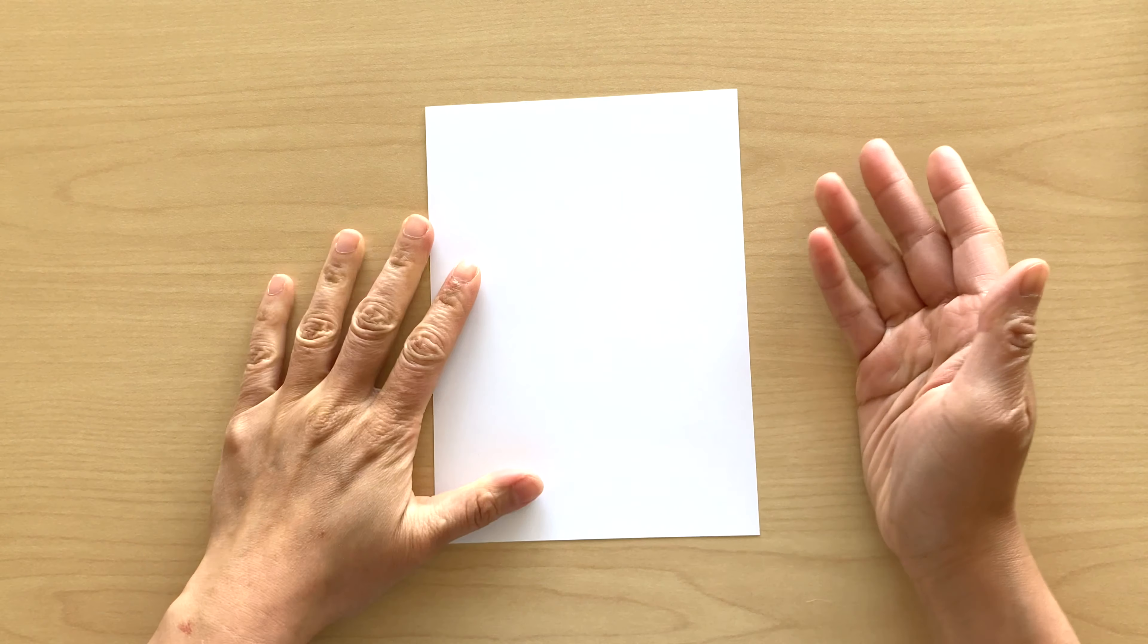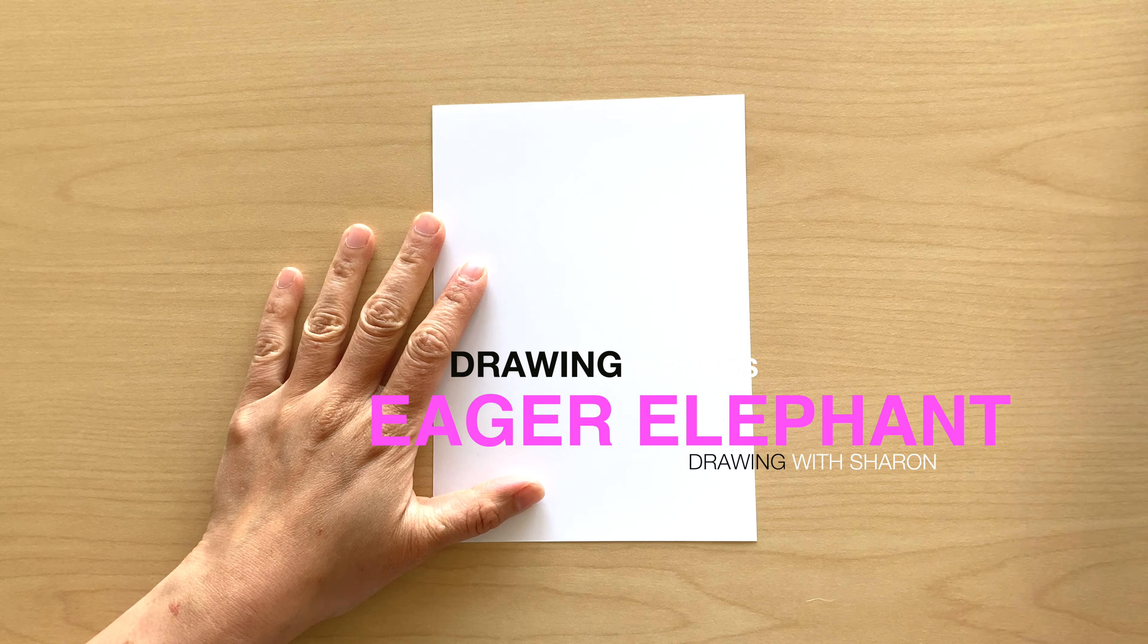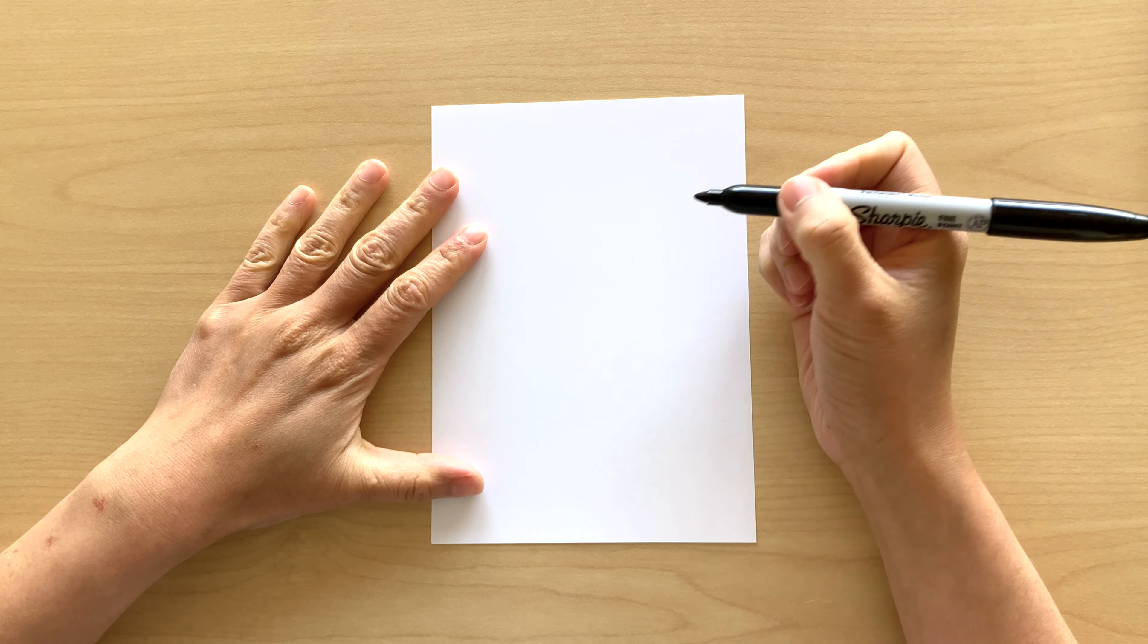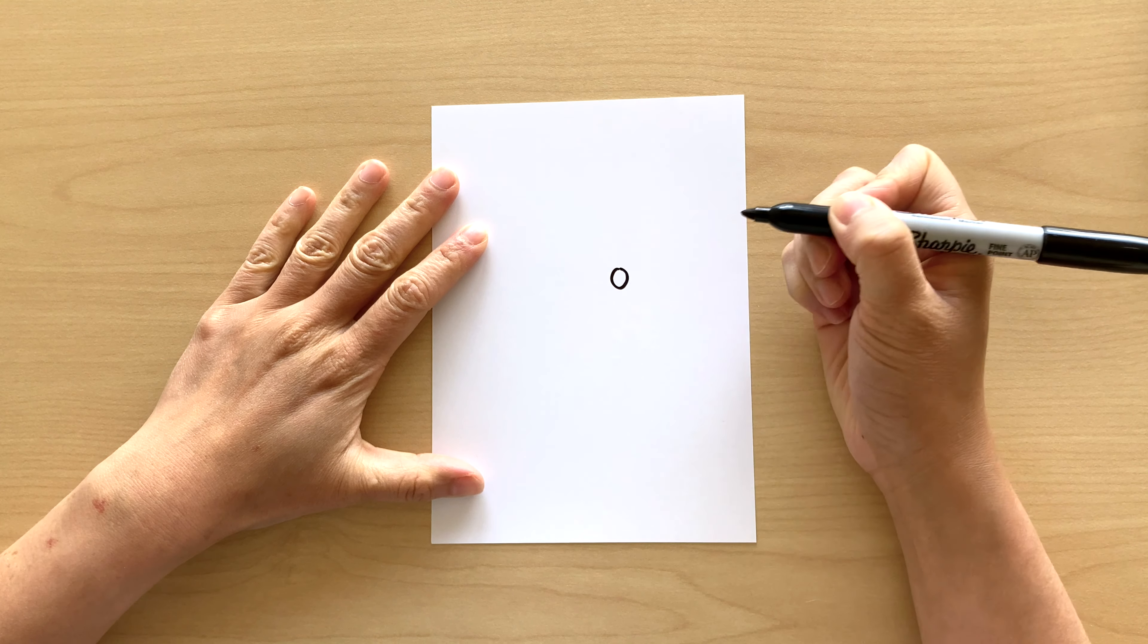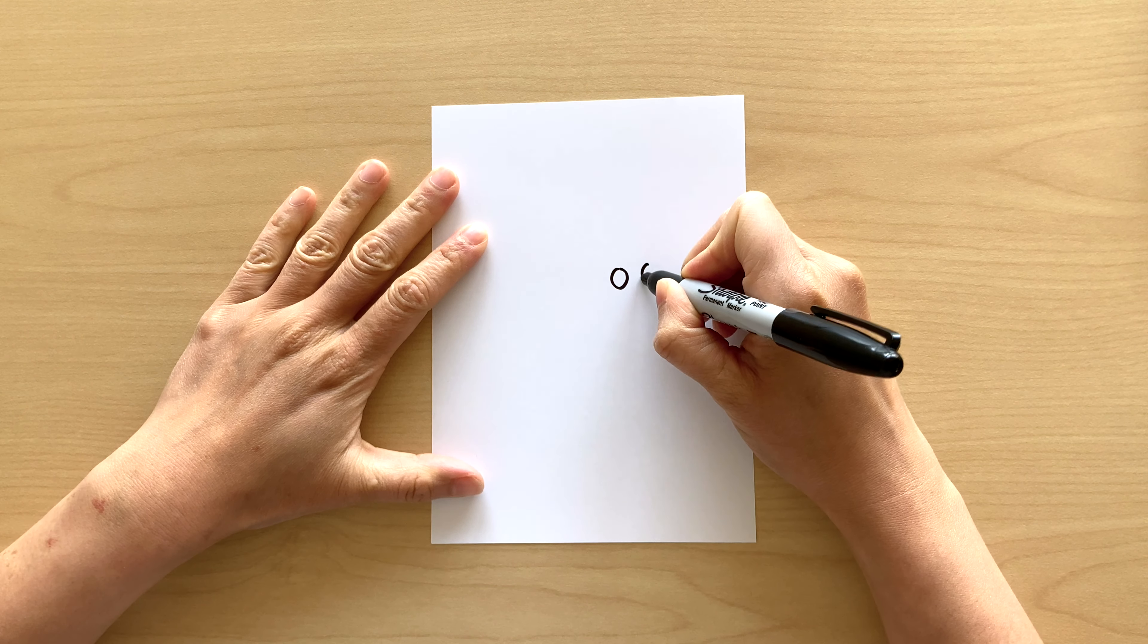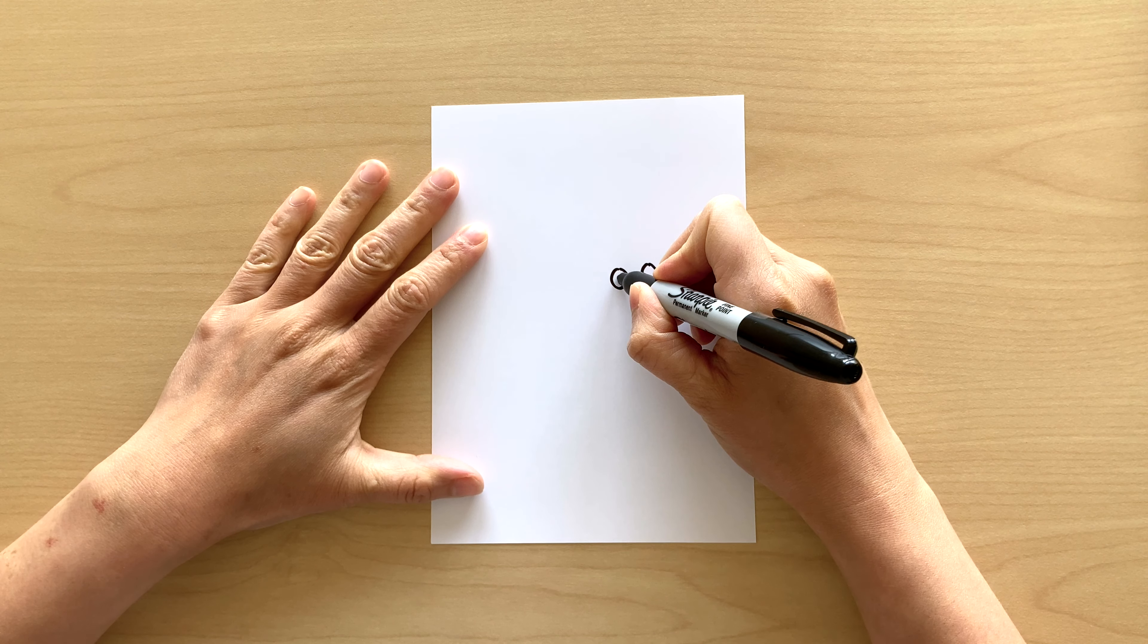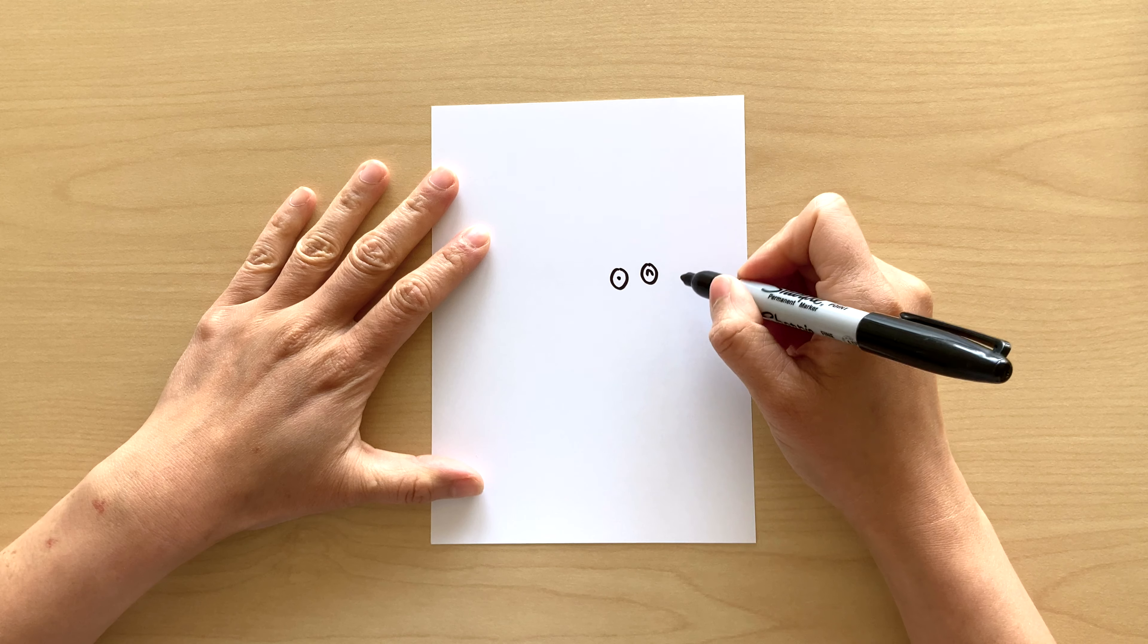We're gonna get started with a blank piece of paper and our black marker. We're gonna be doing the Eager Elephant. I feel like I haven't done an elephant in a while and it's one of my favorite animals. First, we're gonna start with drawing the elephant's face. We're gonna draw two eyes, so two circles side by side.